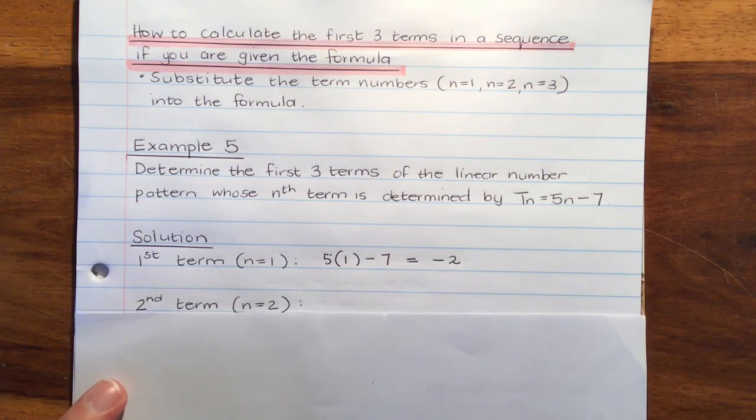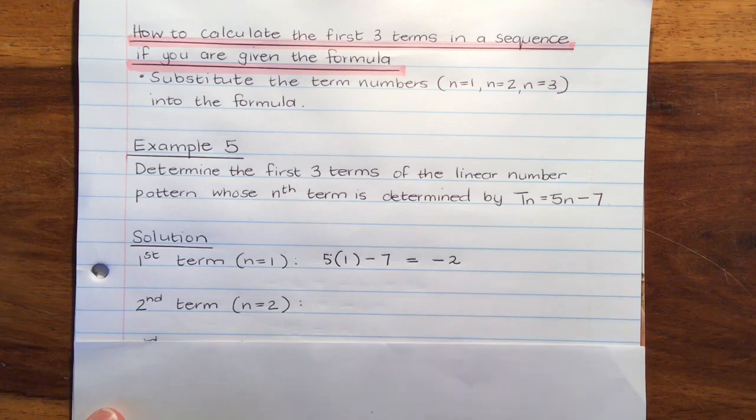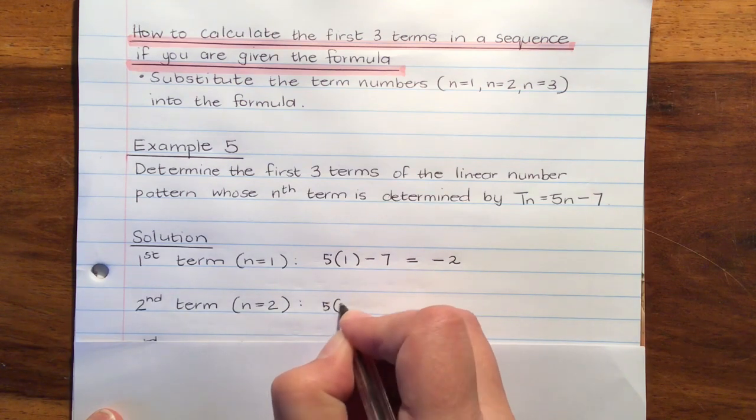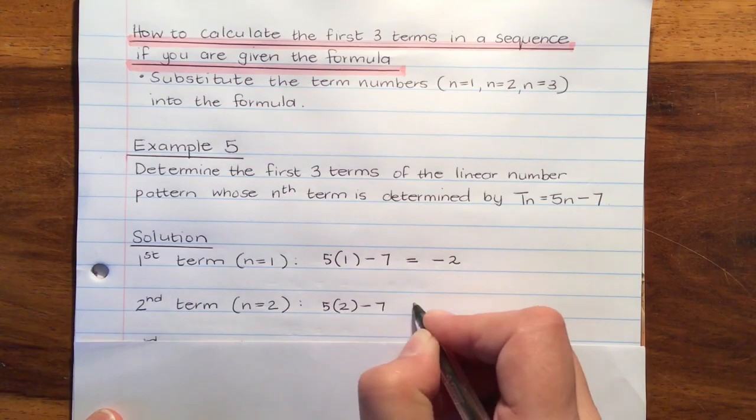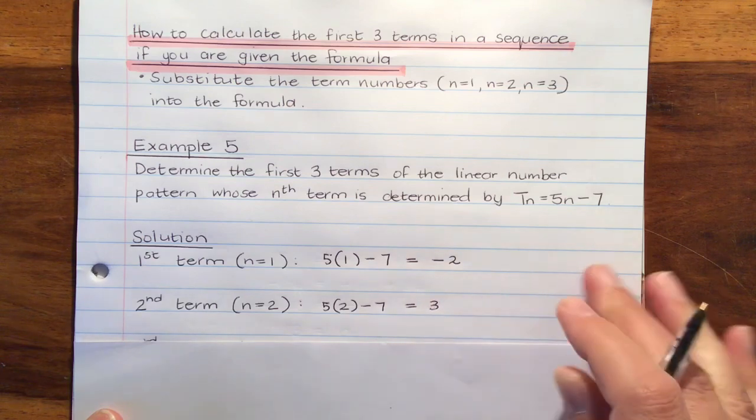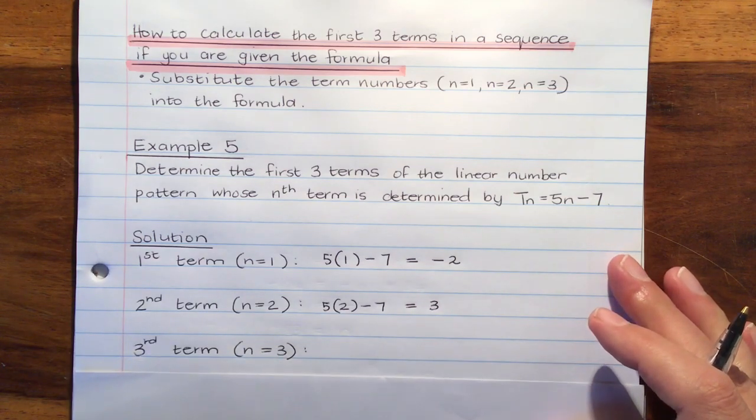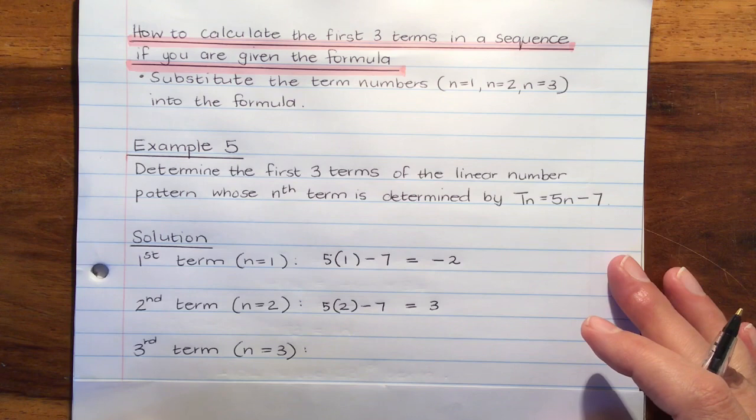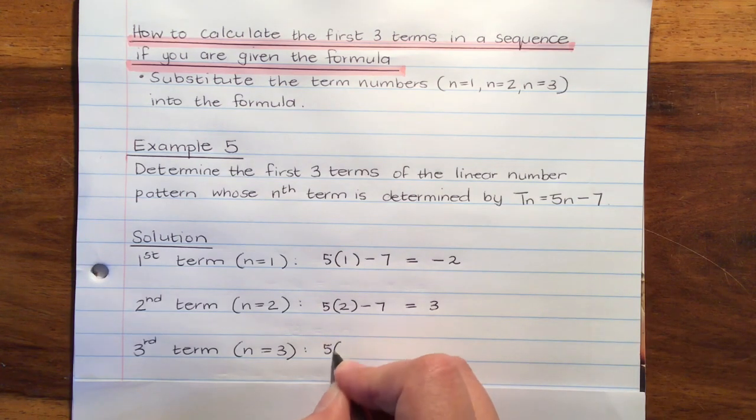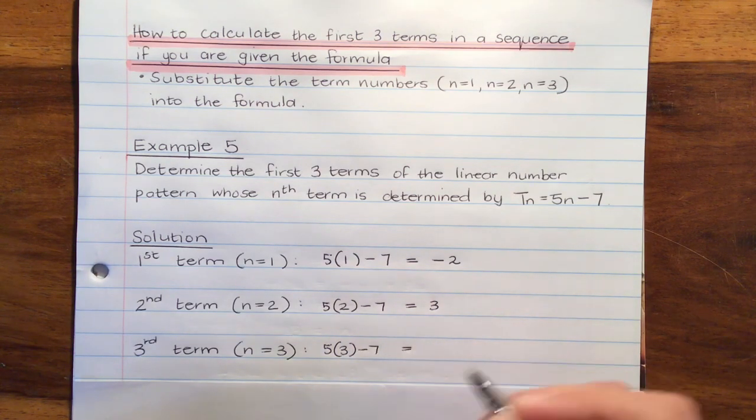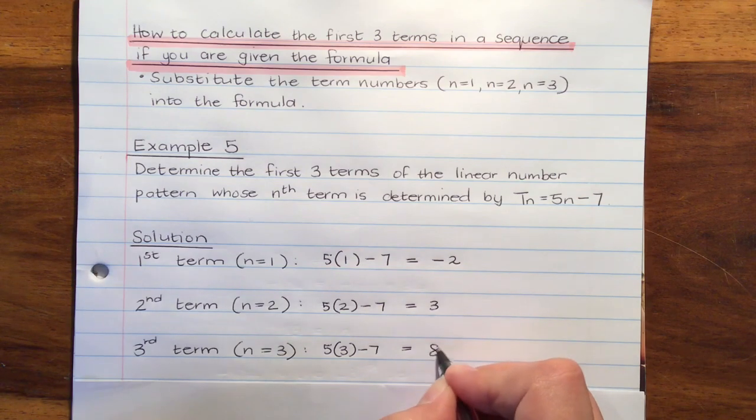For my second term, I'm going to substitute 5 times 2 minus 7, which gives me an answer of 3. And my third term, n is 3, 5 times 3 minus 7, gives me an answer of 8.